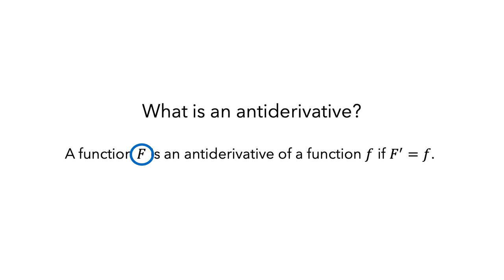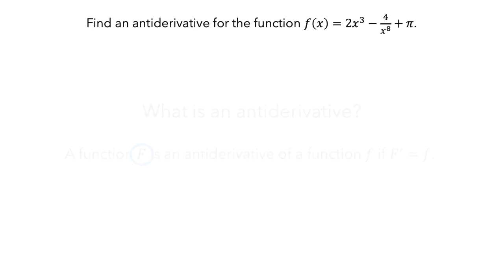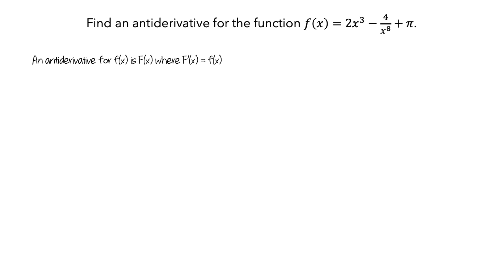Now what does this definition mean? Here is an example. What if we want to find an antiderivative for the function f equals 2x cubed minus 4 over x to the 8th plus pi? That definition tells us that an antiderivative for little f is a function big F where the derivative of big F is little f. Now would be a good moment to pause the video to see if you can find a function with this derivative.